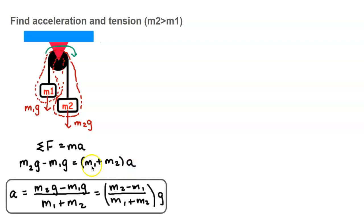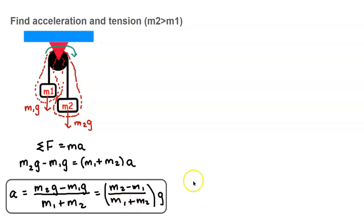Dividing both sides by m1 plus m2, we get acceleration equals (m2g minus m1g) divided by (m1 plus m2). Factoring out g, this simplifies to a equals g times (m2 minus m1) divided by (m1 plus m2).